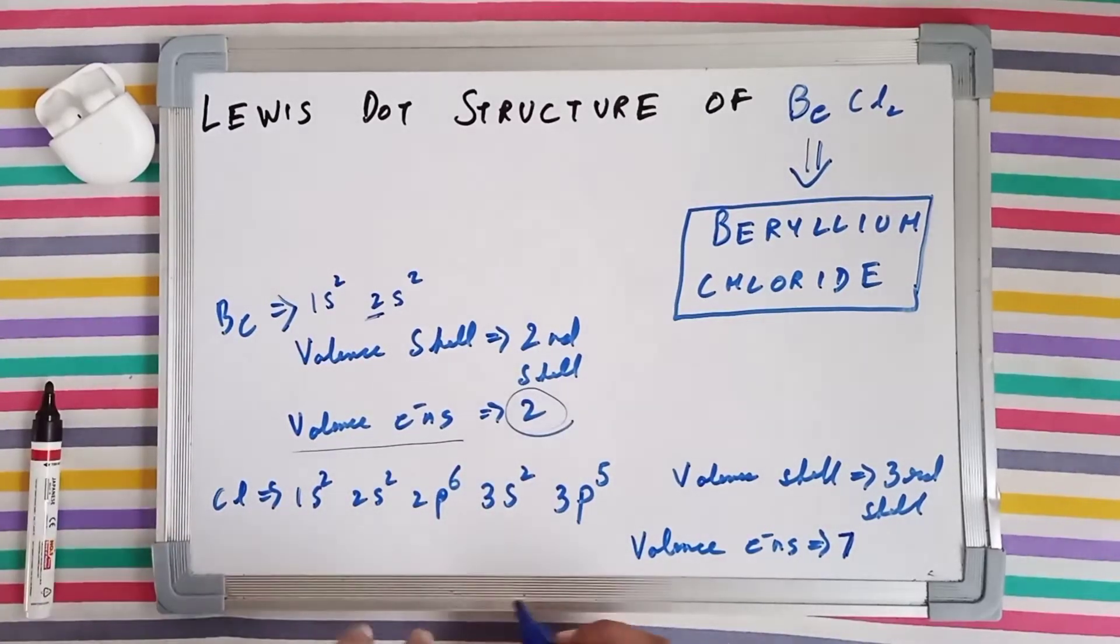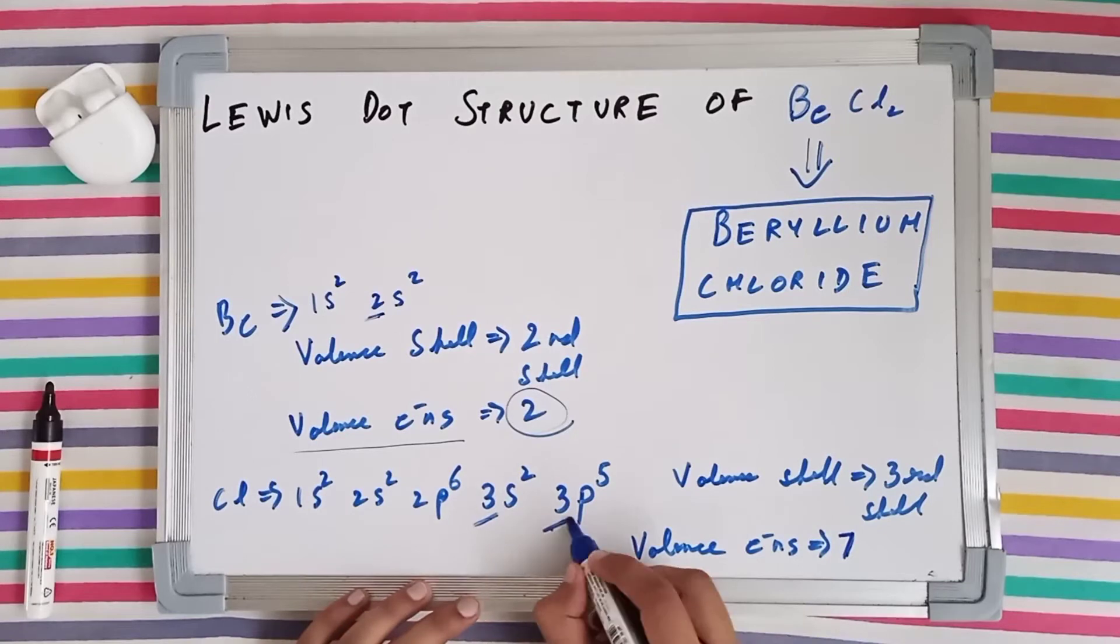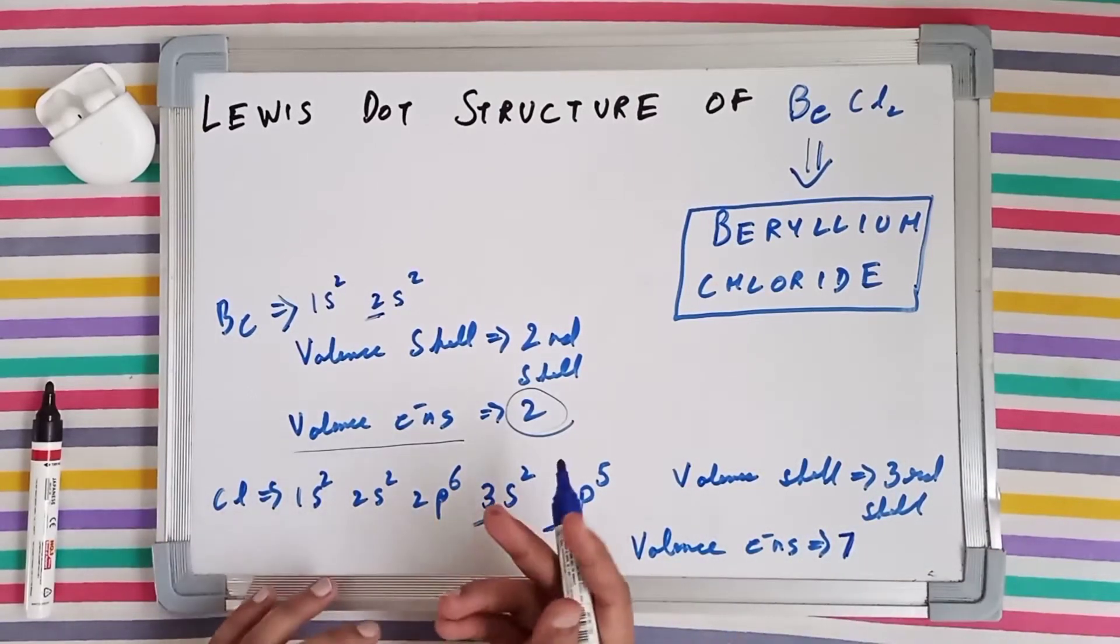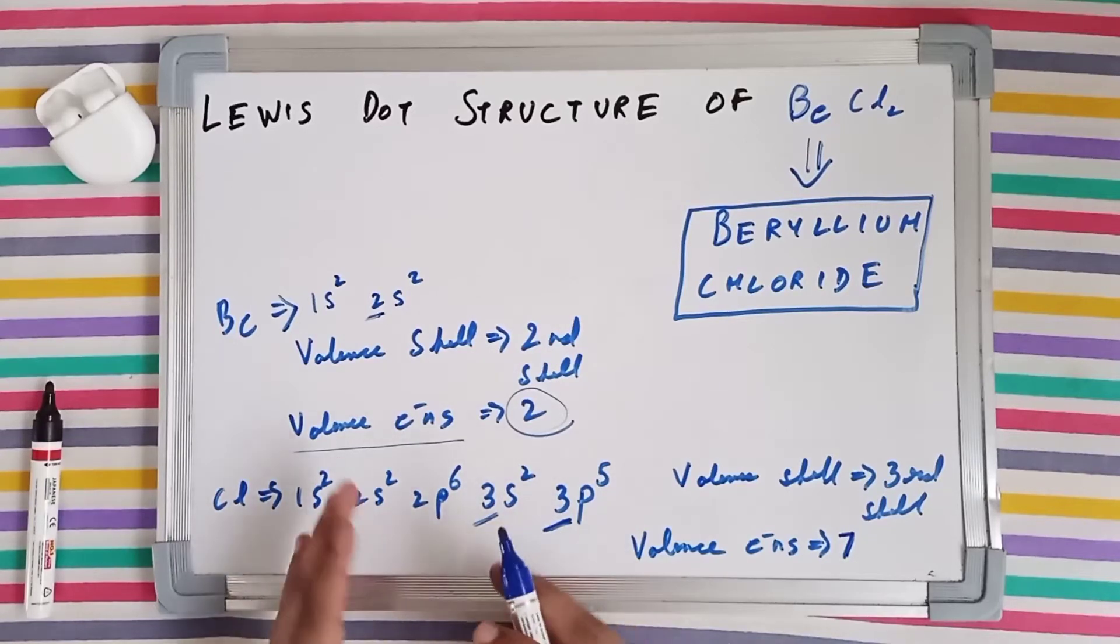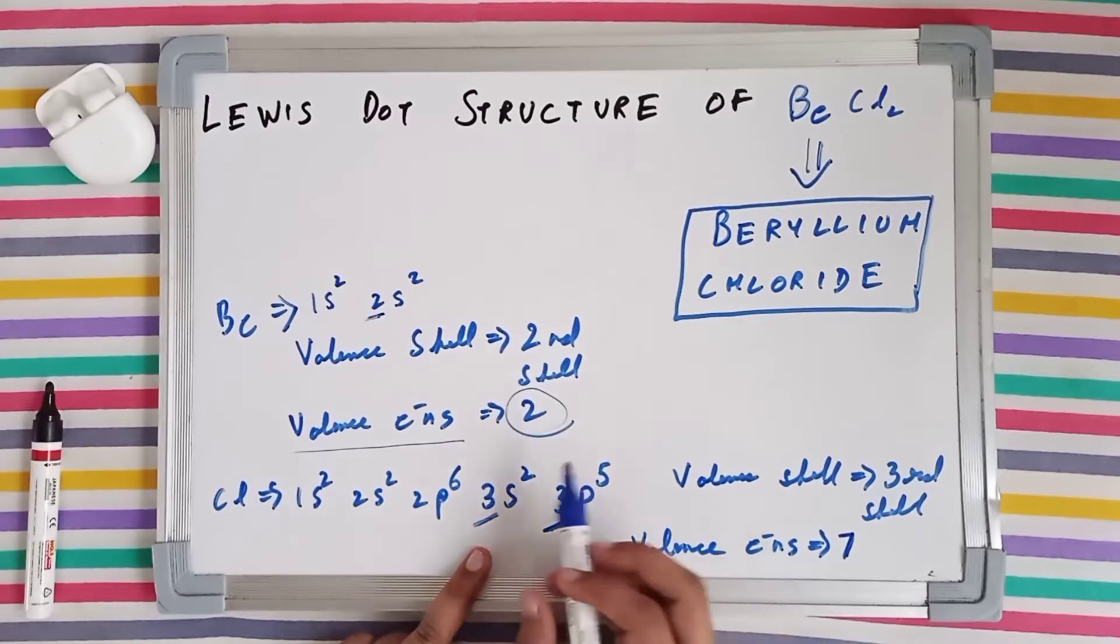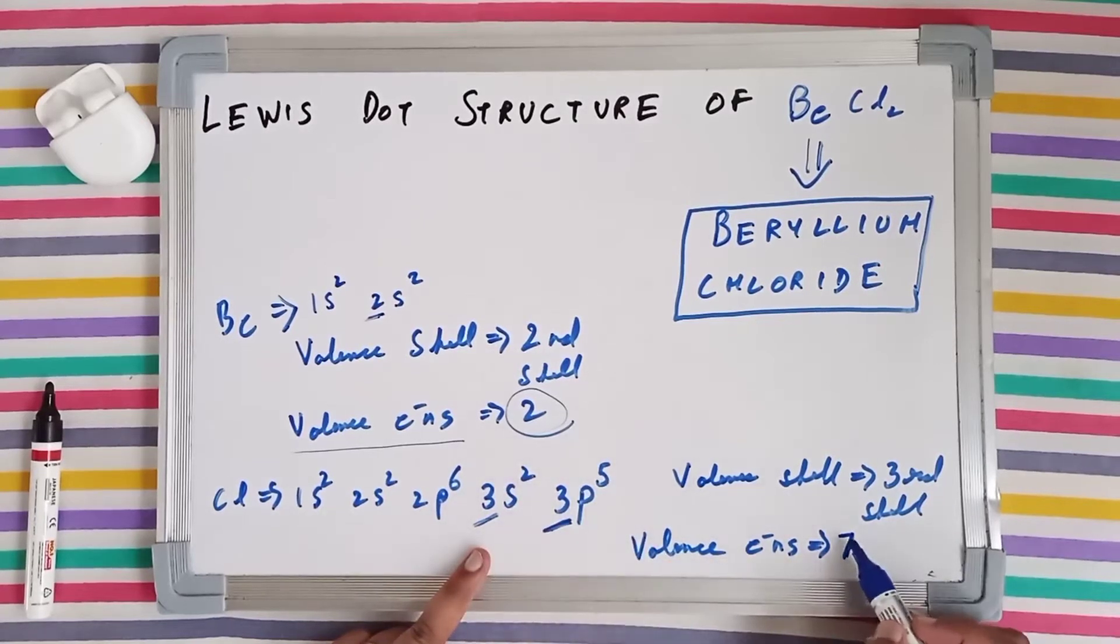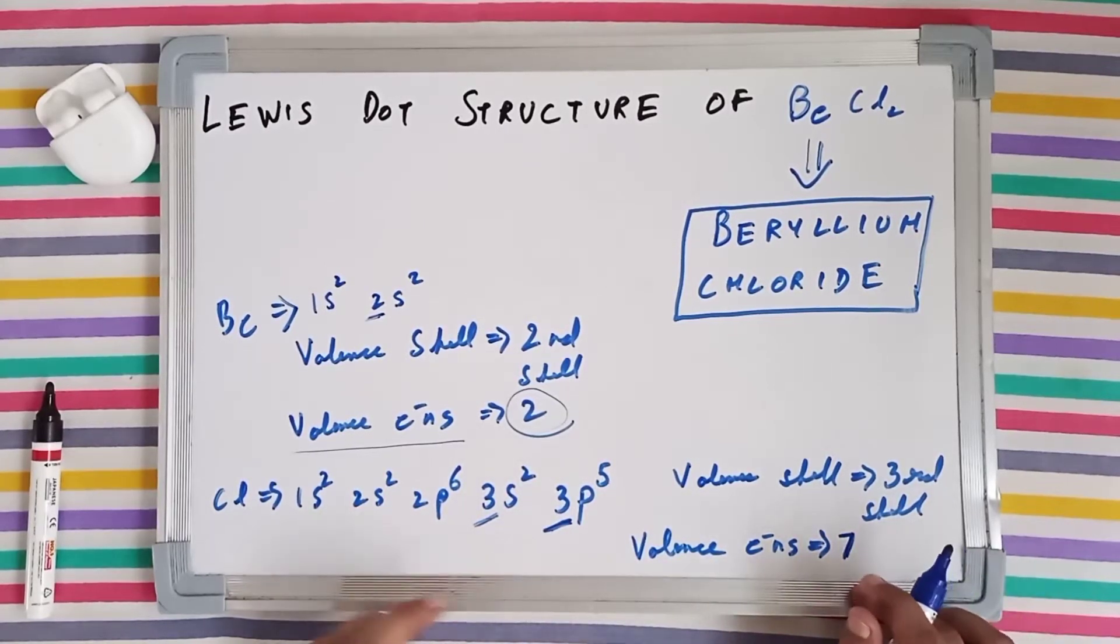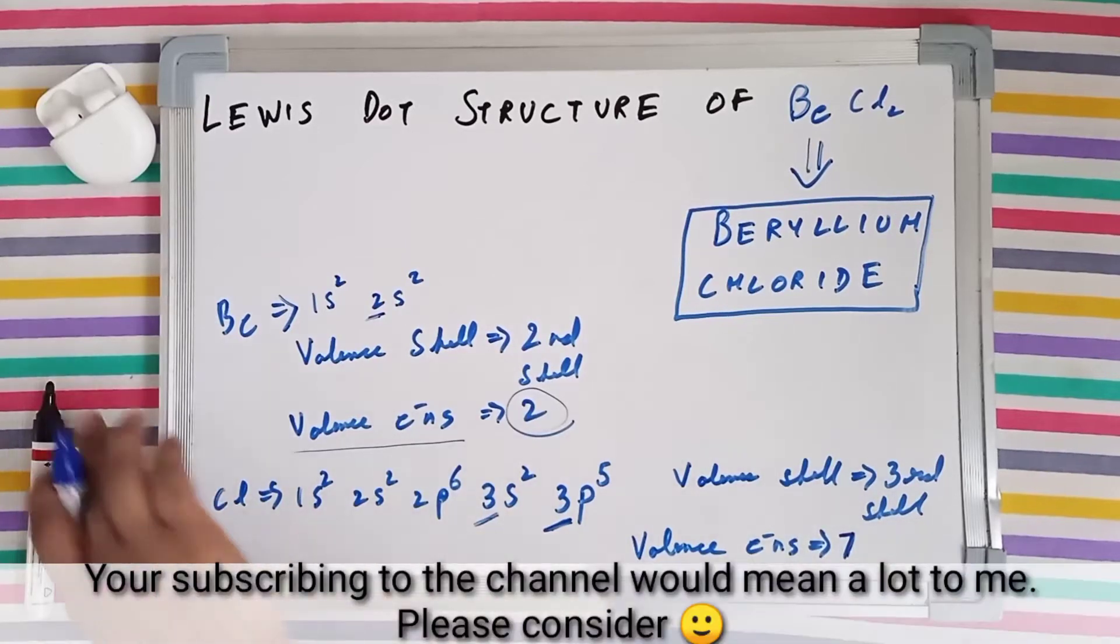Now for chlorine, the valence shell is the third shell. Because before that we have got the 2nd and 1st shells, but the outermost shell is the third shell. The number of valence electrons is 2 plus 5, which is 7. So for chlorine we have got 7 valence electrons.